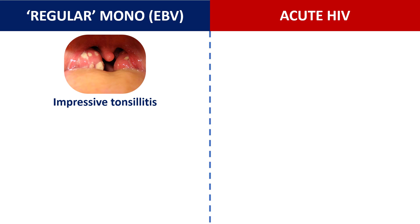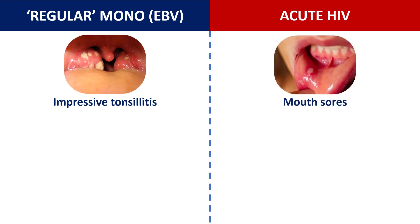Instead, look for mouth sores. Examine the oral cavity carefully, looking for small, shallow, whitish ulcers with a surrounding halo of redness — usually they will be painful. So even if you don't see them, ask your patient if they feel like they have mouth sores. In addition to that, sometimes you might find oral thrush or candidiasis. These two findings — mouth sores and candidiasis — are very uncommon in infectious mononucleosis, but they can be found in acute retroviral syndrome.